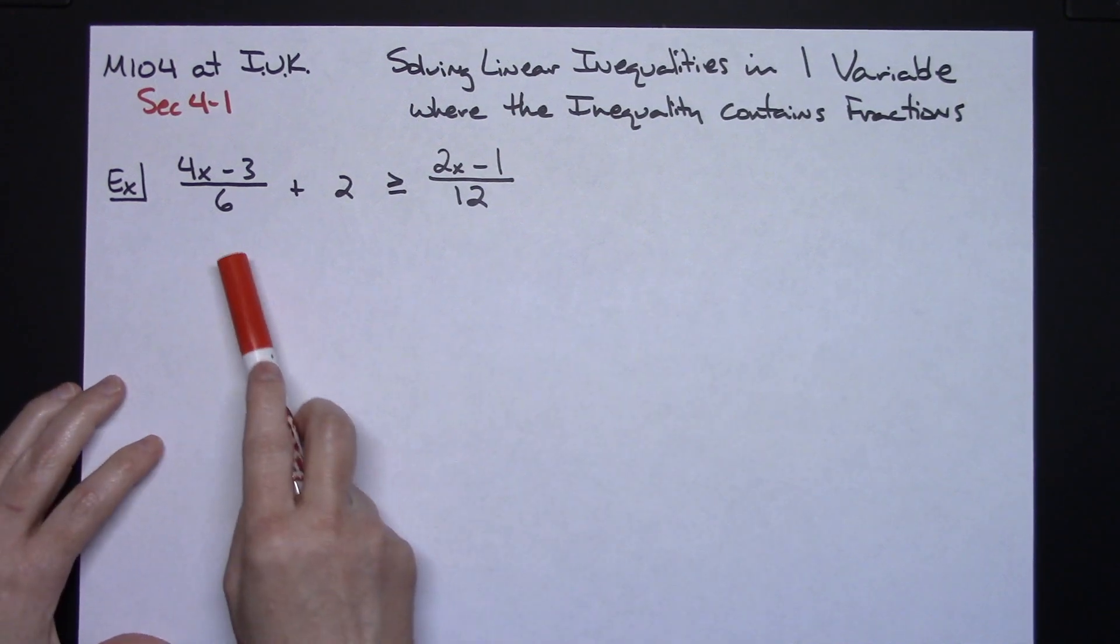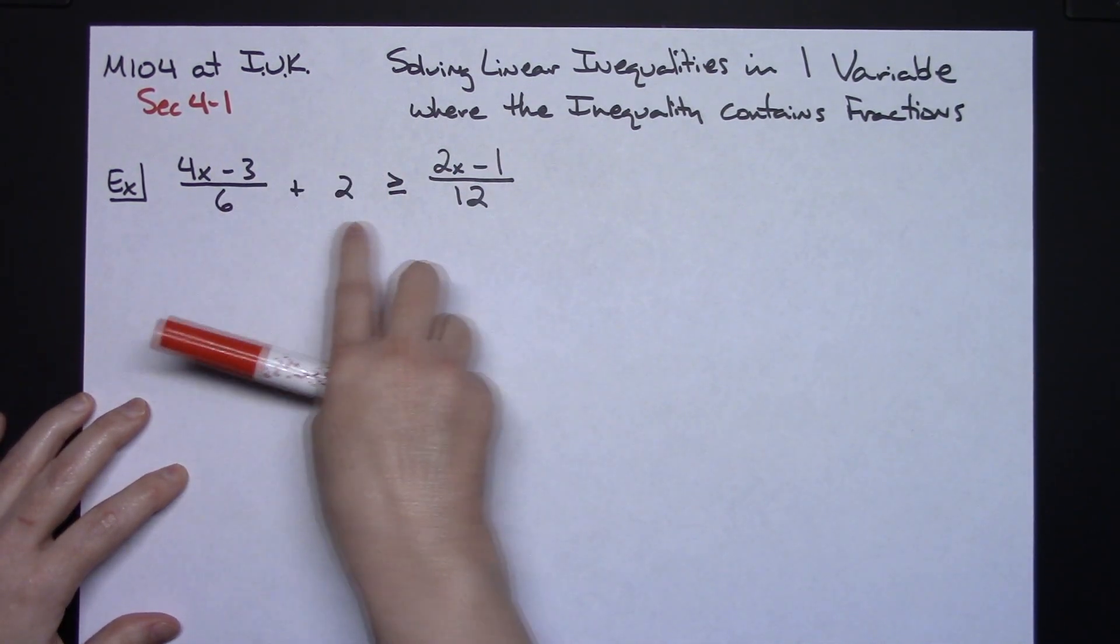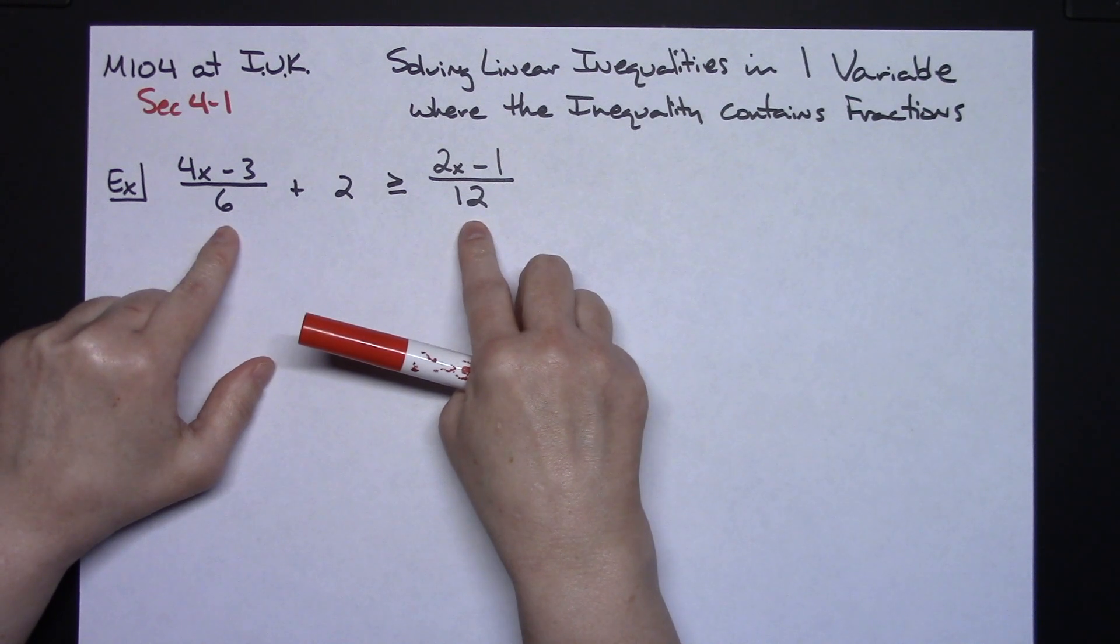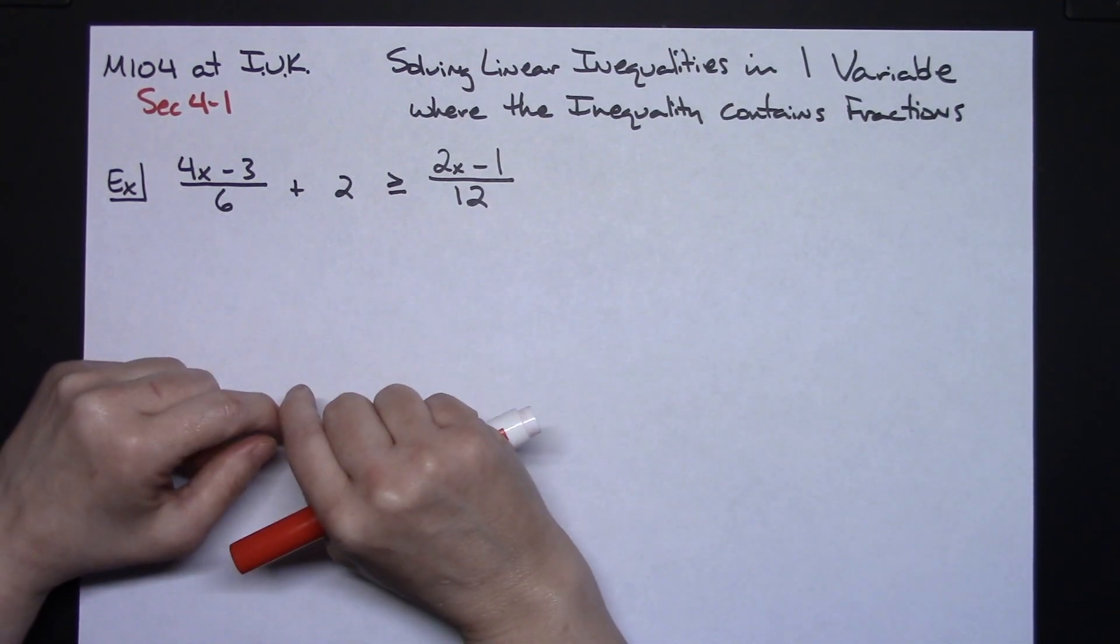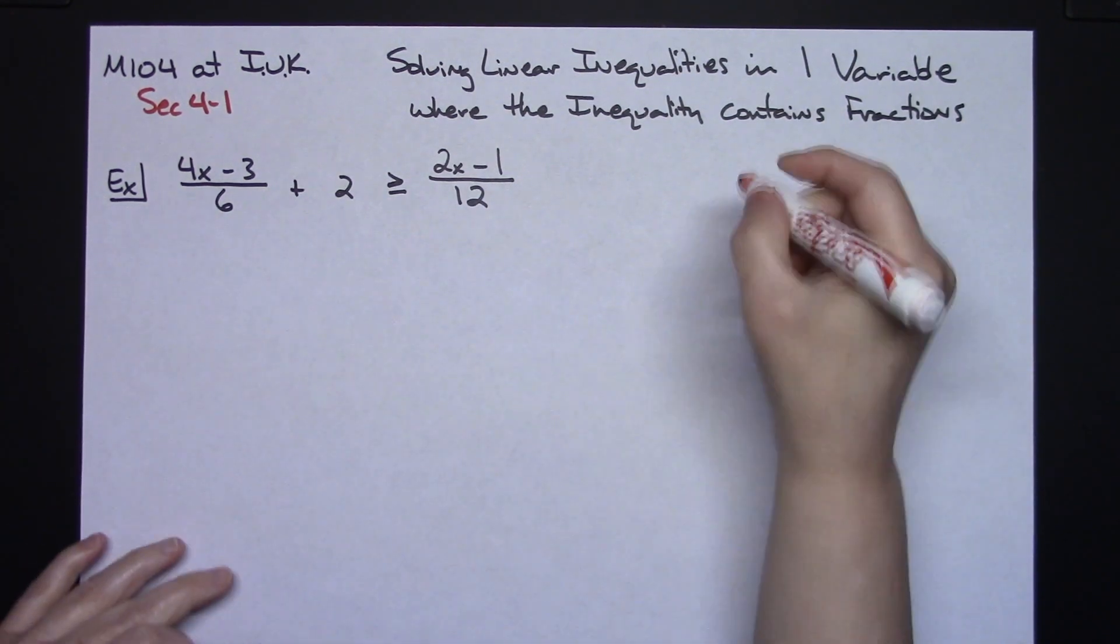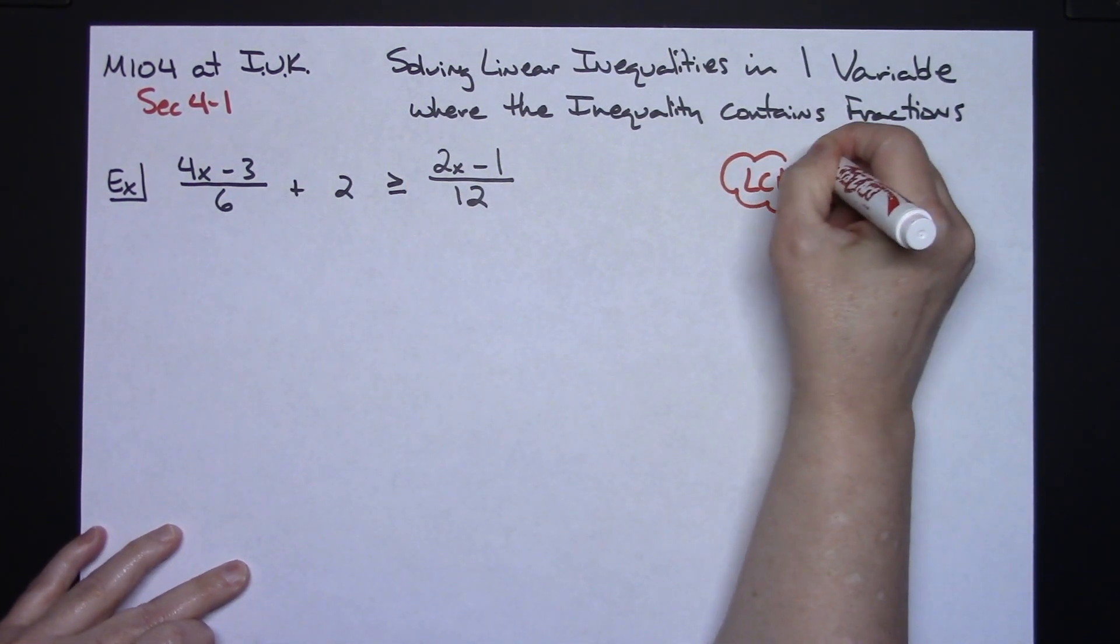The main thing here is anytime you're trying to solve it, it doesn't matter whether it's an inequality or an equation, if you're trying to solve something that has fractions in it, the easiest way to do it would be to get rid of those fractions. So the way you go about doing that is looking at those denominators and coming up with the least common denominator. I've got a 6 and a 12. I want to come up with the smallest number that both 6 and 12 go into. Obviously it's going to have to be bigger than the biggest number. In this case it turns out to be the biggest number. The least common denominator is 12 because 12 goes into 12 and 6 goes into 12.